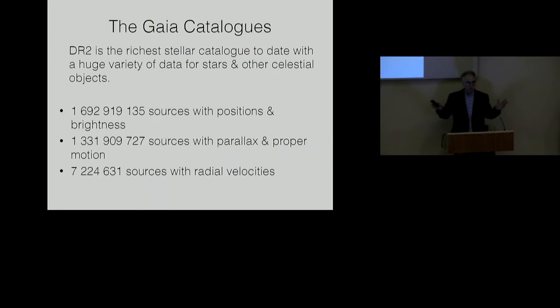To obtain full phase-space information, that is, three positions and three velocities, we will often want to cross-match the Gaia data with spectroscopic surveys.